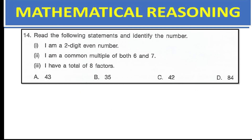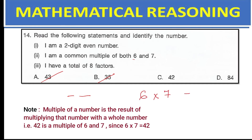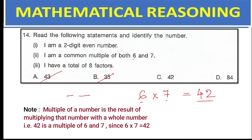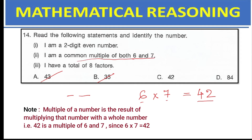Read the following statements and identify the number: I am a two-digit even number; I am a common multiple of both 6 and 7; I have a total of 8 factors. A two-digit even number eliminates options A and B. The common multiple of 6 and 7 is found by multiplying: 6 × 7 = 42. Both 42 and 84 (which is 42 × 2) satisfy the common multiple condition.